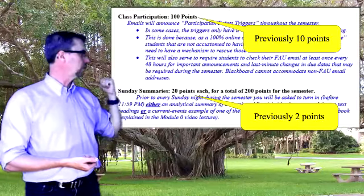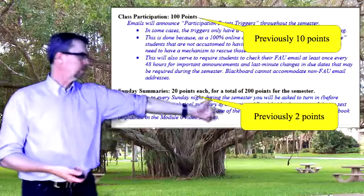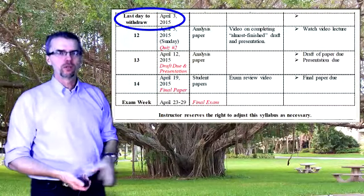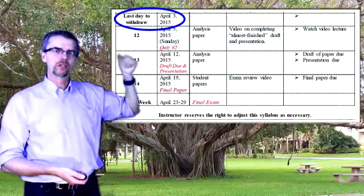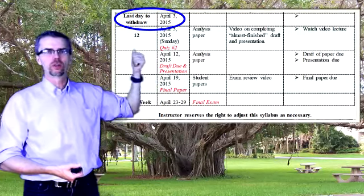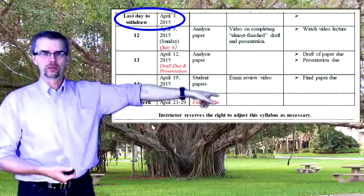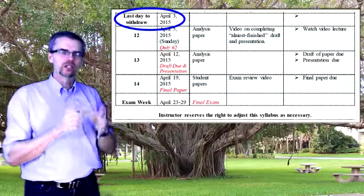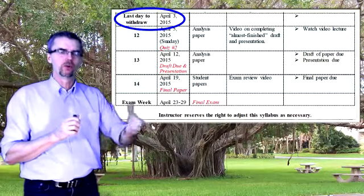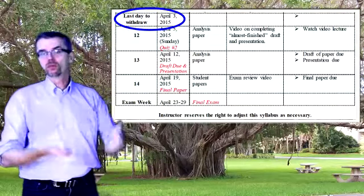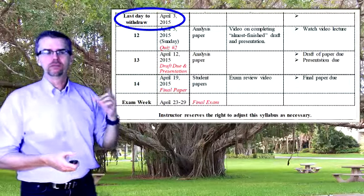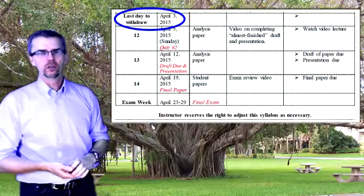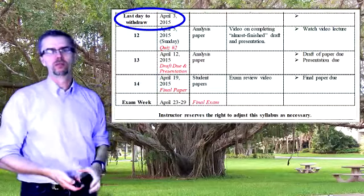Sunday summaries used to be awarded out of 2 points; now they're out of 20 points. Also changed in syllabus version five: you should have seen the email from the provost's office where the last date to withdraw — which was going to be this Friday — has been moved to April 3rd. I had to crowd in the midterm so you could see your grade before the withdrawal date, but the provost's office moved the withdrawal date to April 3rd, and that's now reflected in the syllabus.